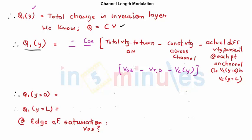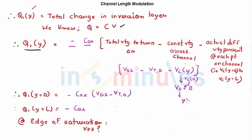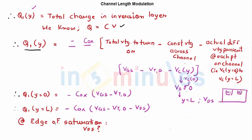At Y=0 (source), VC(Y=0) = VS = 0, so Q1 = −COX × (VGS − VT0). At Y=L (drain), VC(Y=L) = VDS, so Q1 = −COX × (VGS − VT0 − VDS). At saturation, VDS = VDSat = VGS − VT, so substituting into the equation at Y=L gives Q1 = −COX × 0.